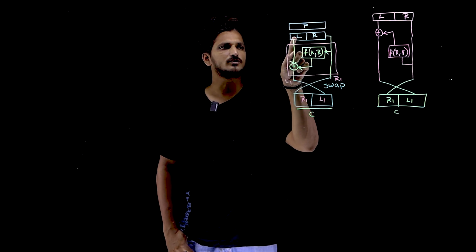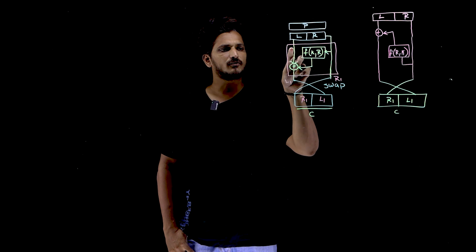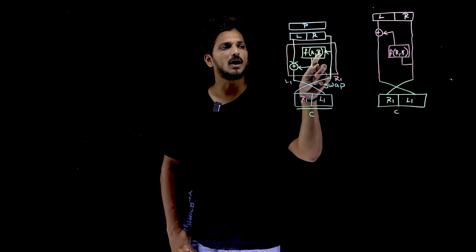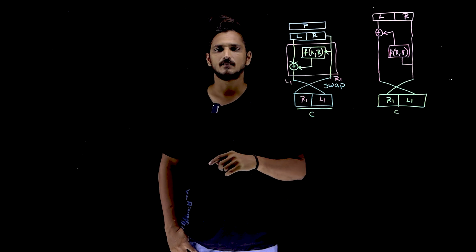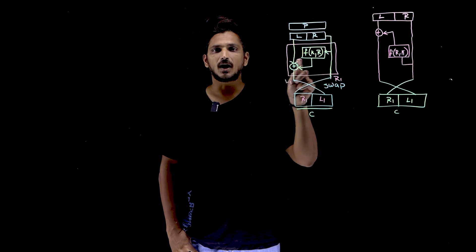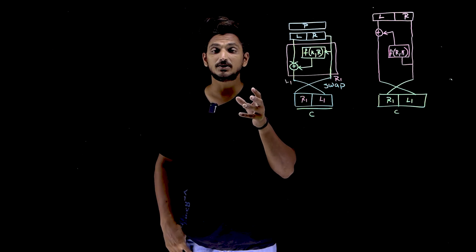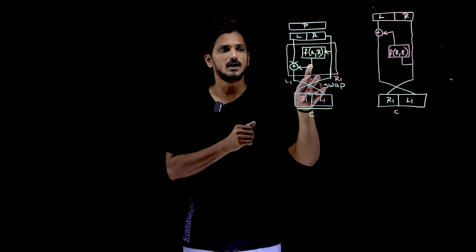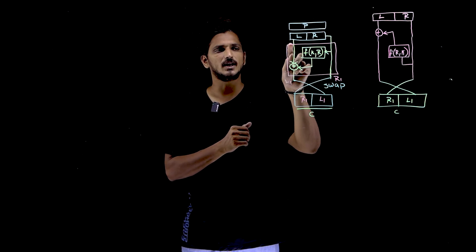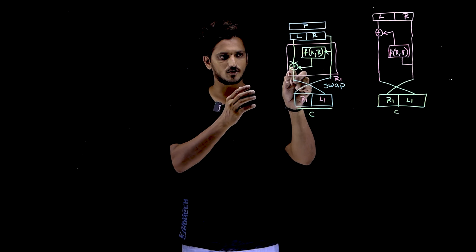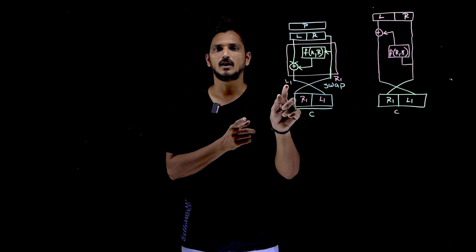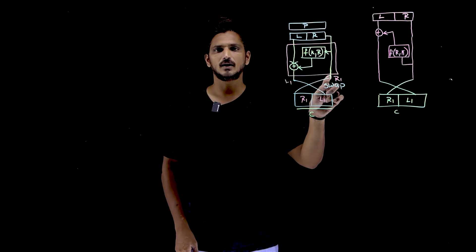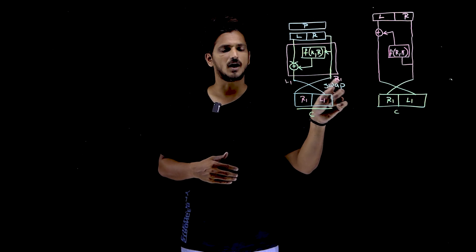Let us understand how we are going to use the Feistel cipher in our modern block cipher. We divided our plaintext into two halves: left and right part. The left part is XORed with f(k, r), where r is the right part. f(k, r) is the Feistel function — it provides a non-invertible output, which we call x. That x is XORed with the left part. Whatever output you get, you take it as L1, and this right part moves into the ciphertext as R1.